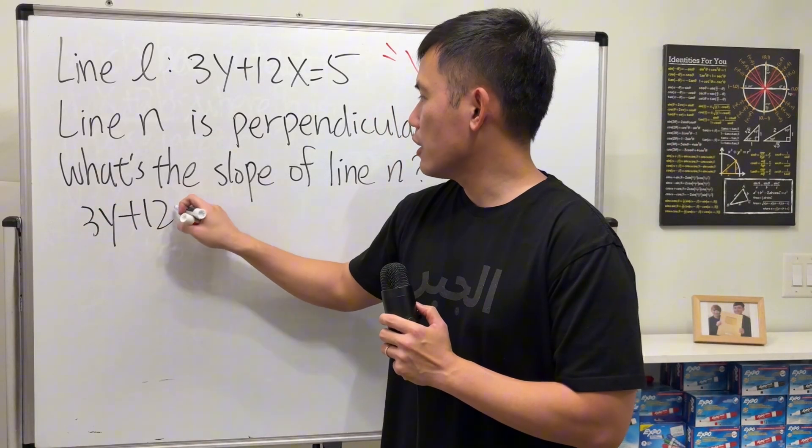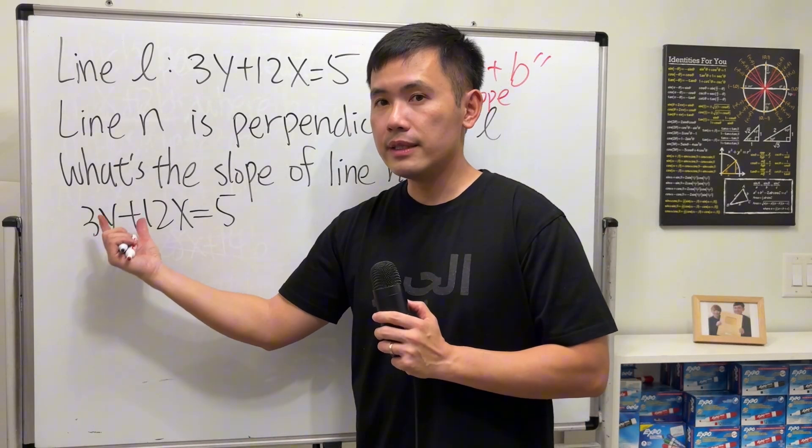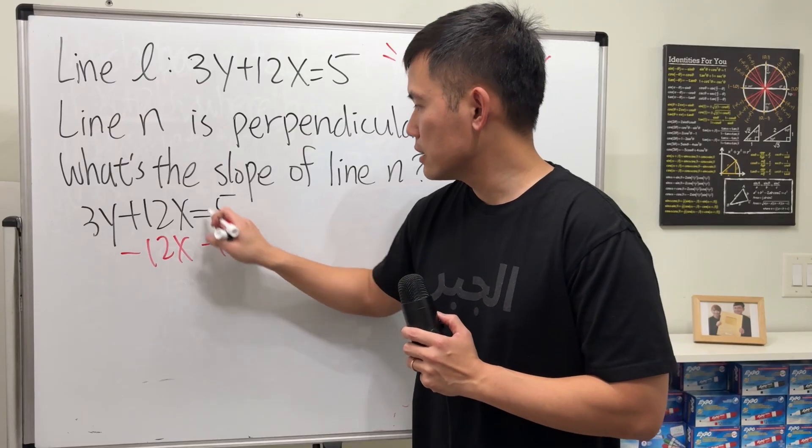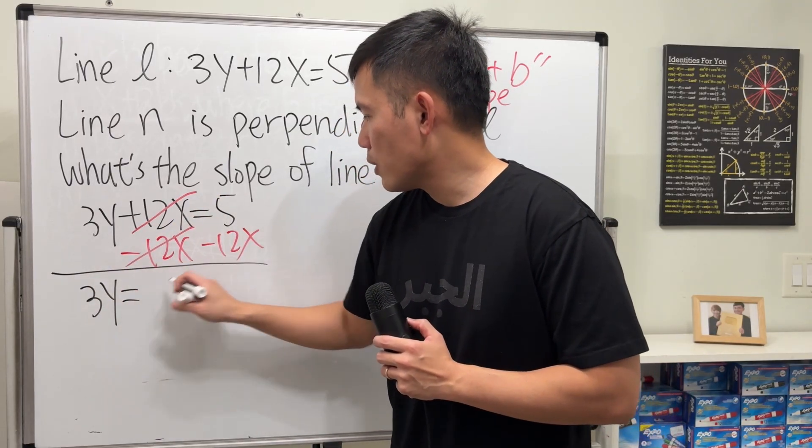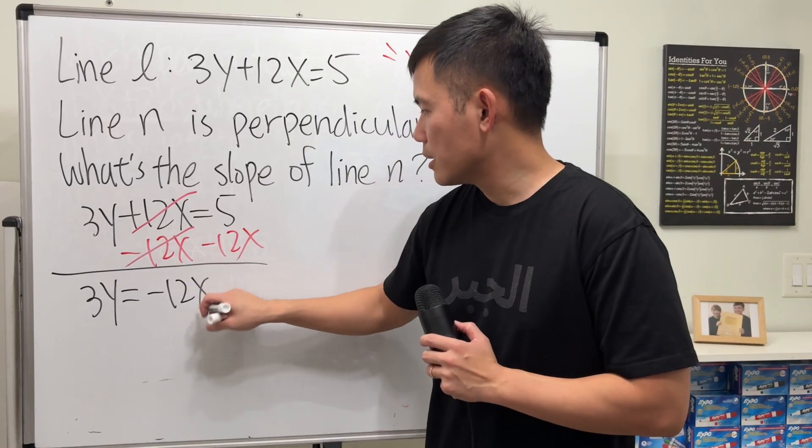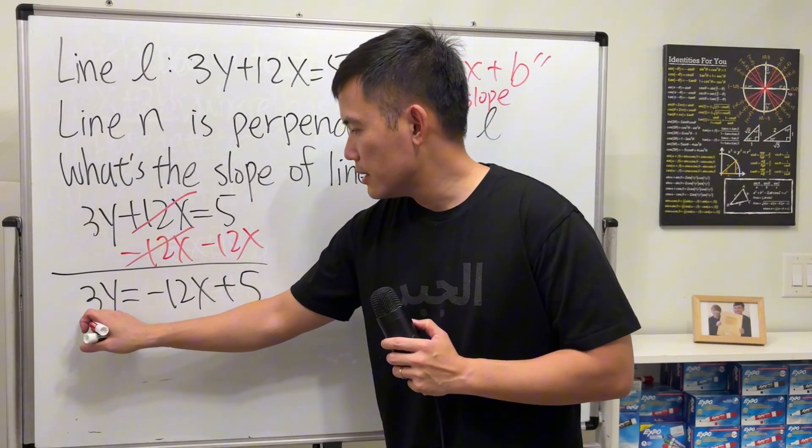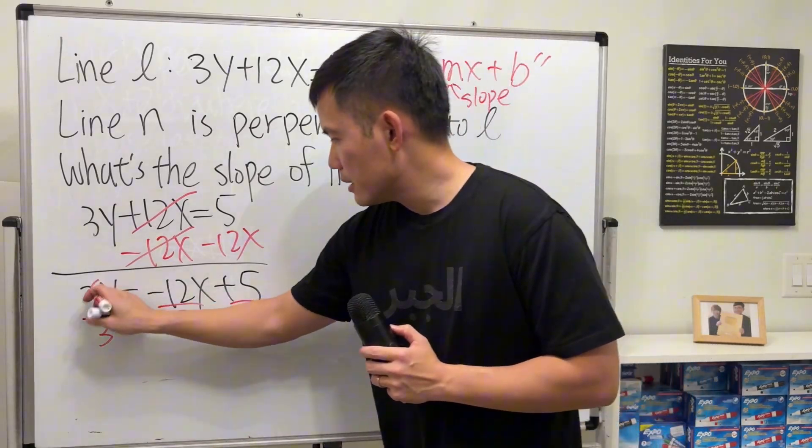Begin with 3y plus 12x is equal to 5. I want to isolate the y, so that's minus 12x to both sides. And then we have 3y equals negative 12x plus 5. This is 3 times y, so let's divide everybody by 3. Cancel.